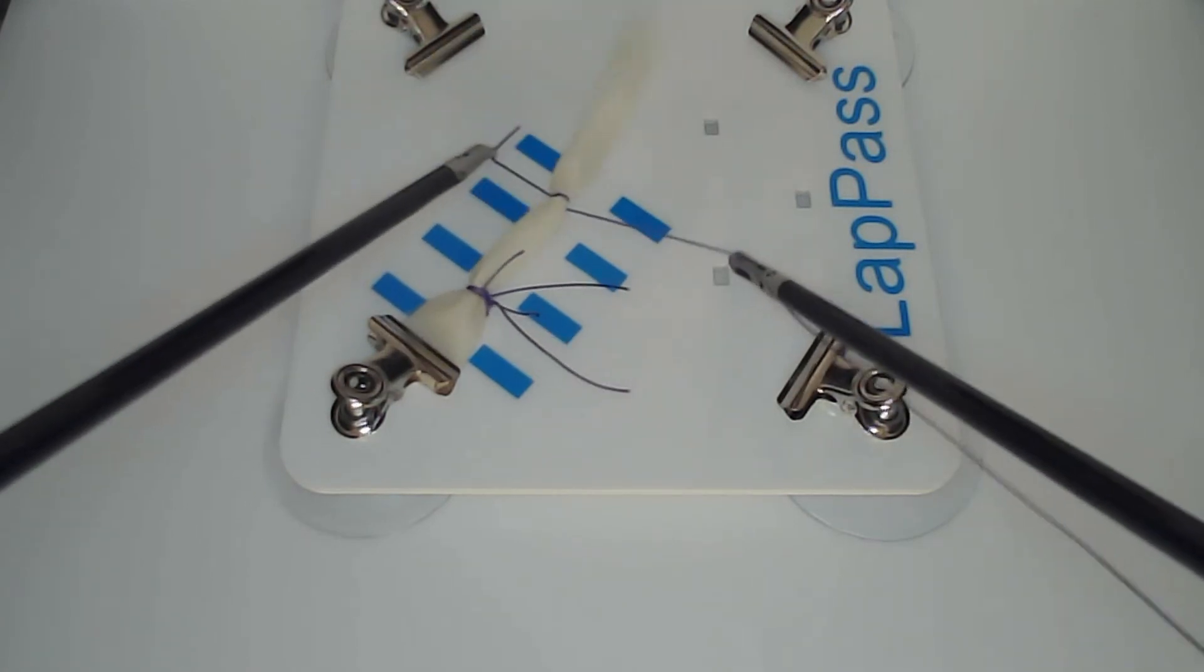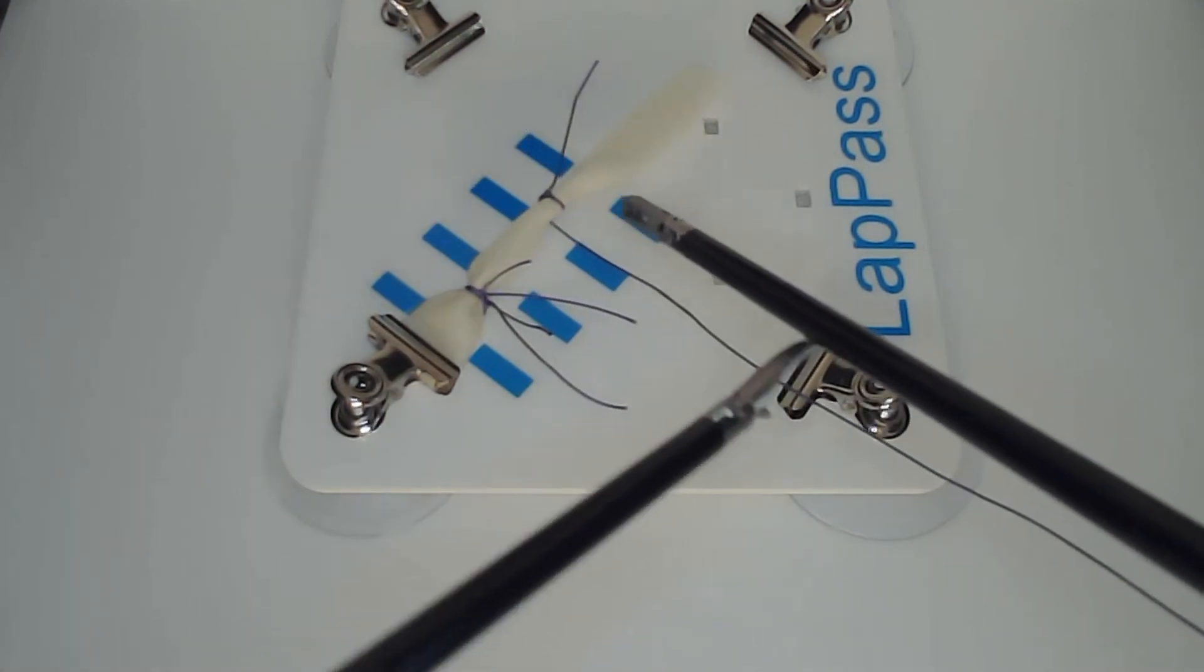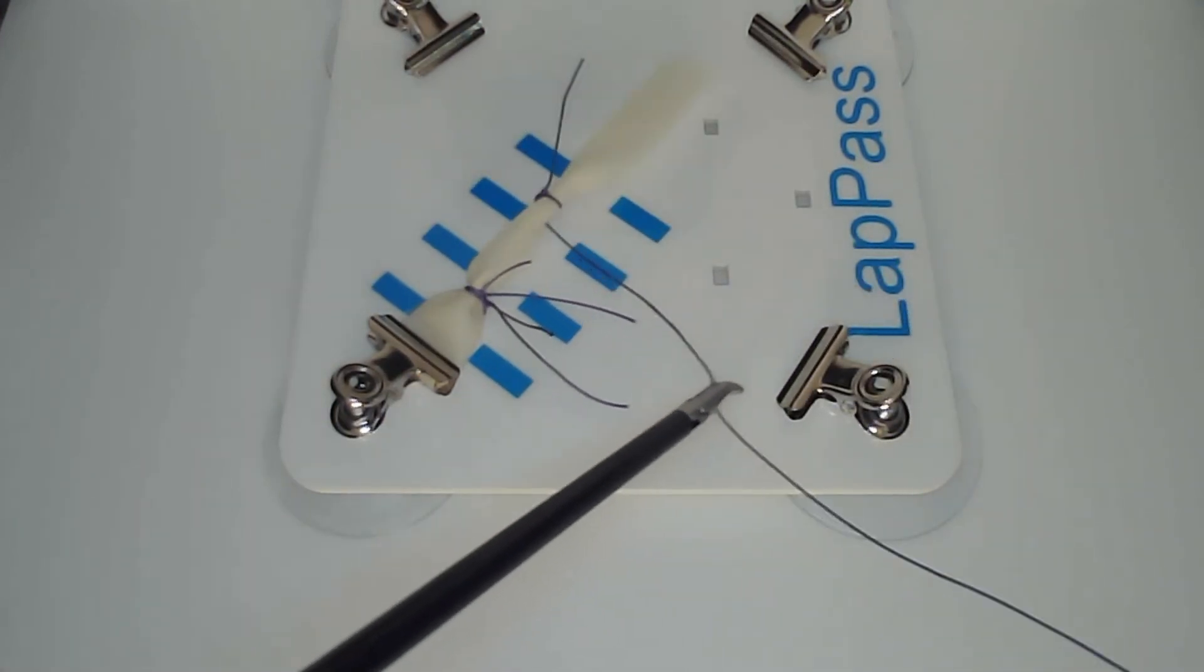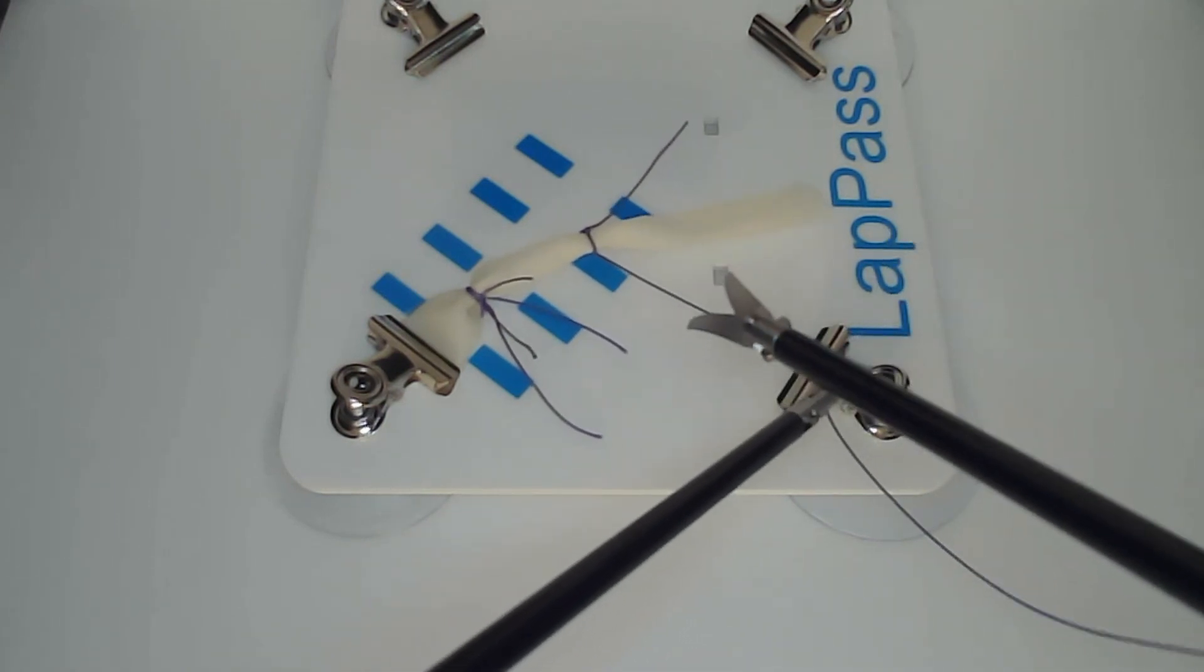At the end of the task, the security of these knots will be tested to ensure that they'll be secure and in an appendicectomy that they wouldn't leak.